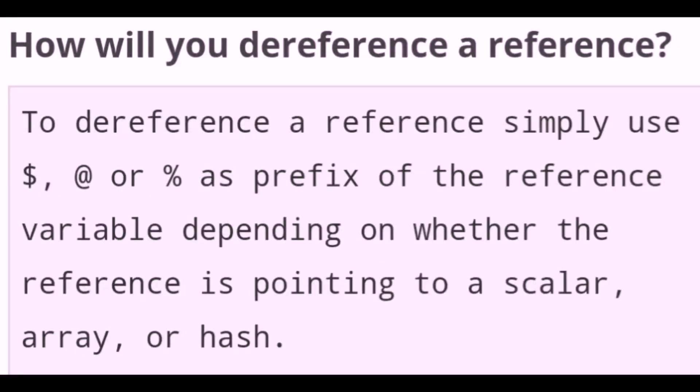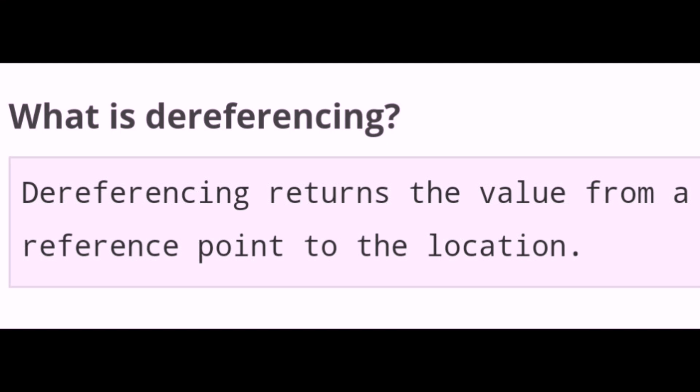How will you dereference a reference? To dereference a reference, simply use $, @, or % as a prefix of the reference variable, depending on whether the reference is pointing to a scalar, array, or hash. Dereferencing returns the value from a reference point to the location.